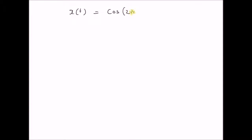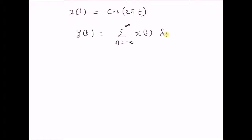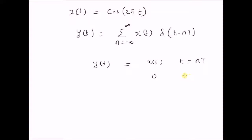Given the continuous signal x(t) = cos(2πt), the sampling system is given by y(t) equal to the sum from n = minus infinity to plus infinity of x(t) times the unit impulse delta(t - nT). The system can be rewritten as y(t) = x(t) for t = nT and 0 elsewhere.